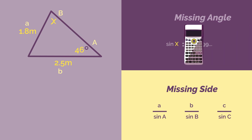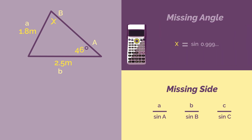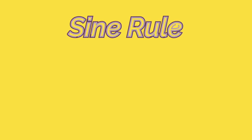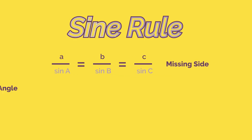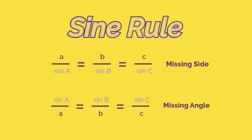And that is all you need to be able to use the sine rule. You can find a missing side using this version and a missing angle using this version. Although there are three parts, we only ever use two of them, so I just ignore the c and the sine c and stick to the a's and b's.